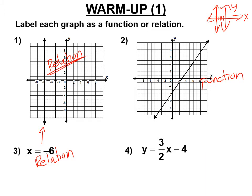Then y = (3/2)x - 4 has a y-intercept of negative 4 and a slope of positive 3/2. That line is a function — a linear function in slope-intercept form. But there are other kinds of functions, and we're going to learn about those today.